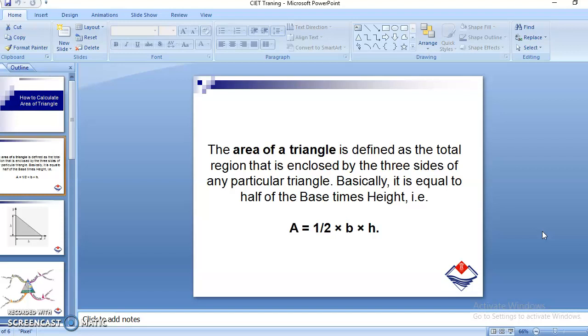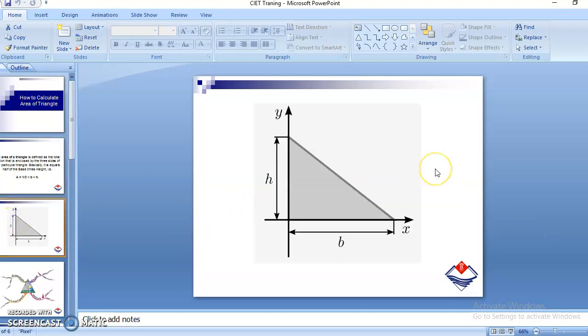Whenever we are trying to calculate the area of a triangle, we will have to use this formula: half b h, half breadth into height. Now we can depict the same thing with this particular figure. You can see that here we are having x and y axis, and the height h and b will be multiplied by half.